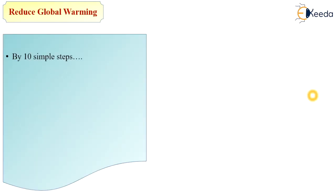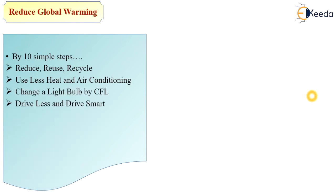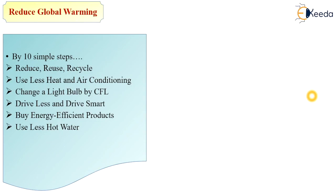To reduce global warming, everyone should practice these 10 simple steps: reduce, reuse, and recycle — the main principle of environmental management. Use less heat and air conditioning. Change light bulbs to CFL bulbs. Drive less and drive smart. Buy energy-efficient products. Use less hot water. Use the off switch. These simple steps help minimize global warming, and it is our responsibility to follow them.